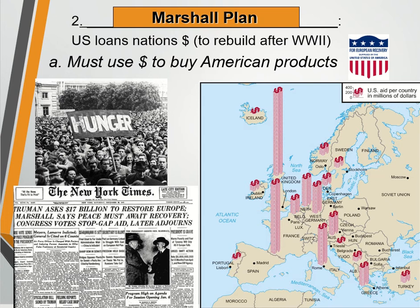You can see on the map all of the places with money signs showing where we're giving them money — obviously France and the United Kingdom get the most. There are no money signs over here because those are all going to be part of the Warsaw Pact and allies to the Soviet Union. So we're definitely making sure our money goes where we're going to have friendships and alliances.